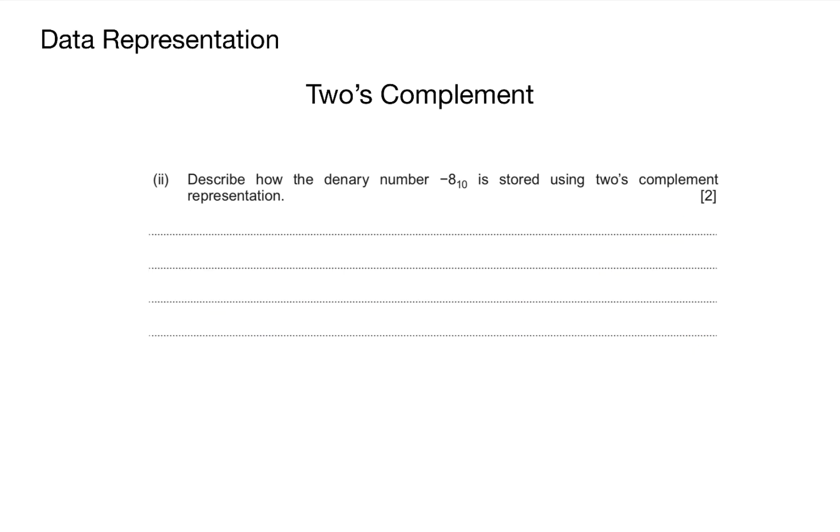I know we're going a little bit quick, so let's put that into the context of an example. Describe how the binary number -8 is stored using two's complement representation. From my experience, questions about two's complement always require you to explain your method.